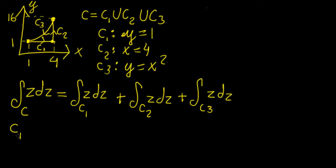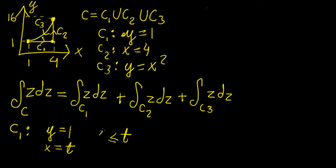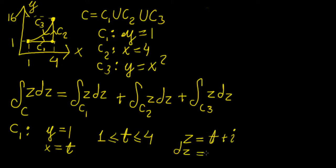To solve this, let's start with c1. The curve is defined by y equals 1, so y is constant. Let x be defined by parameter t. The boundaries of integration are along the x-axis, since x is the only variable changing, so t goes from 1 to 4. We define z as t plus i, so dz equals 1 times dt.